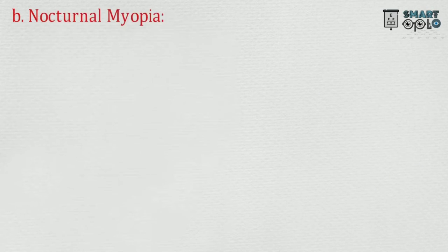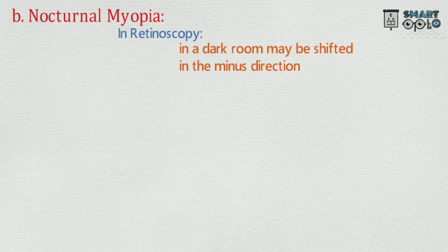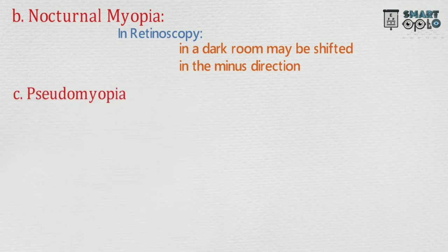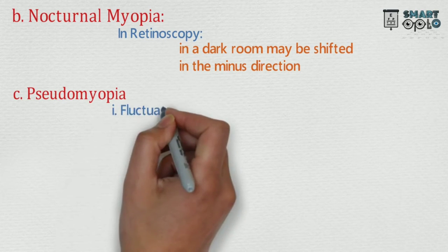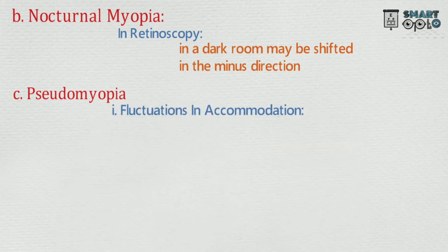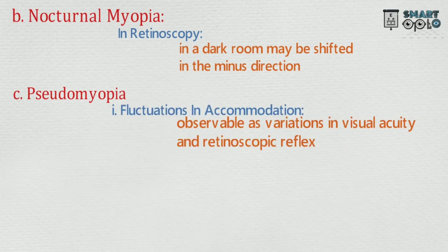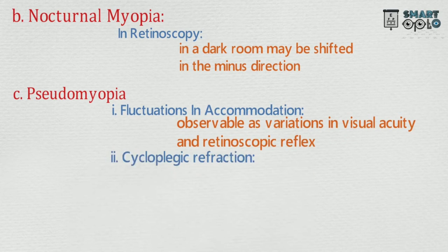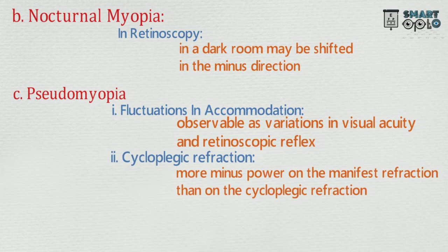B. Nocturnal myopia: in retinoscopy in a dark room, may be shifted in the minus direction. C. Pseudomyopia — signs are: 1. Fluctuation in accommodation, observable as variation in visual acuity and retinoscopic reflex. 2. Cycloplegic refraction: more minus power on the manifest refraction than on cycloplegic refraction.